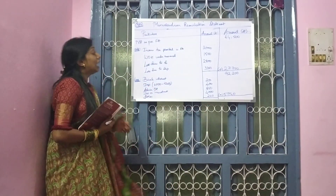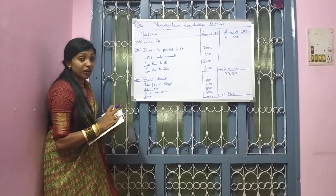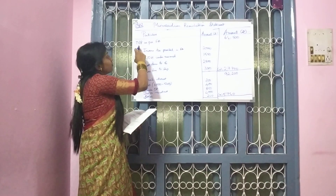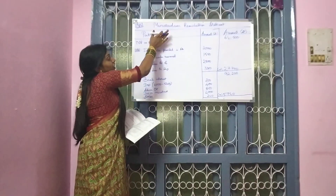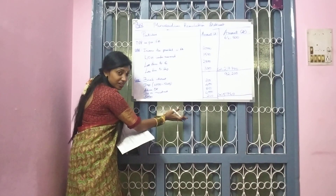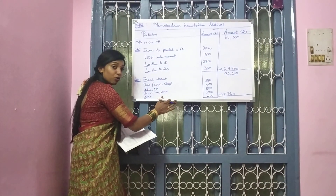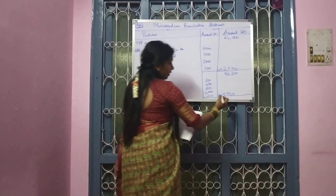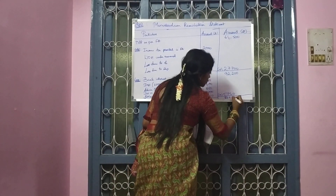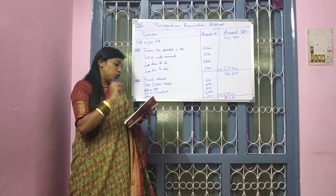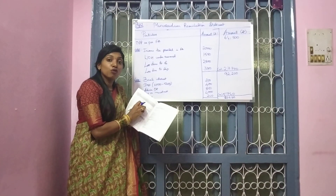Your end result will be net profit as per cost accounts. First, you have taken net profit as per financial accounts, so the end result is net profit as per cost accounts. If you are taking net profit as per CA, the end result will be net profit as per FA. So net profit as per FA gives you the end result of net profit as per CA. The figure is 86,460. If you check your question, the cost book showed a net profit of 86,460.